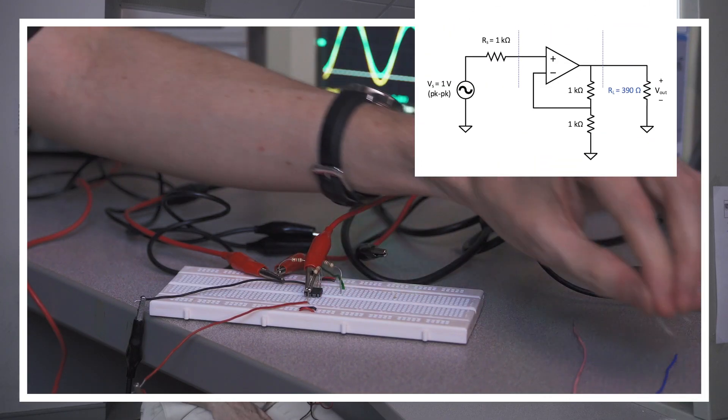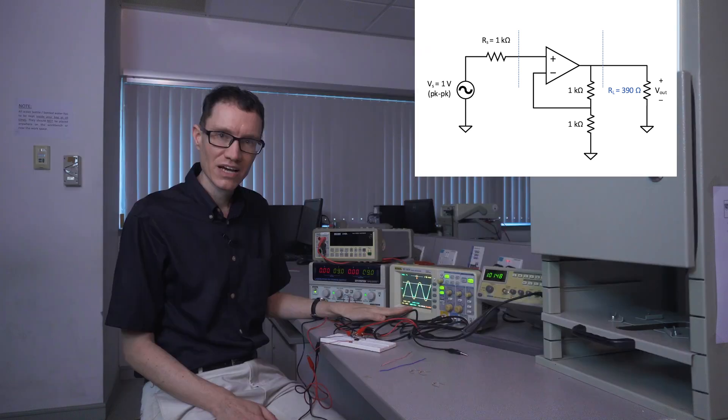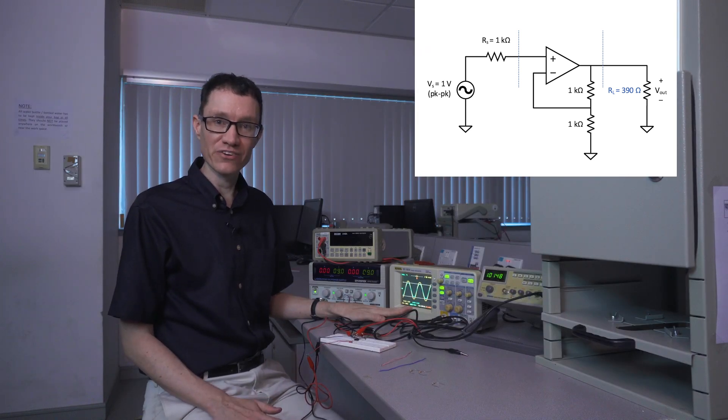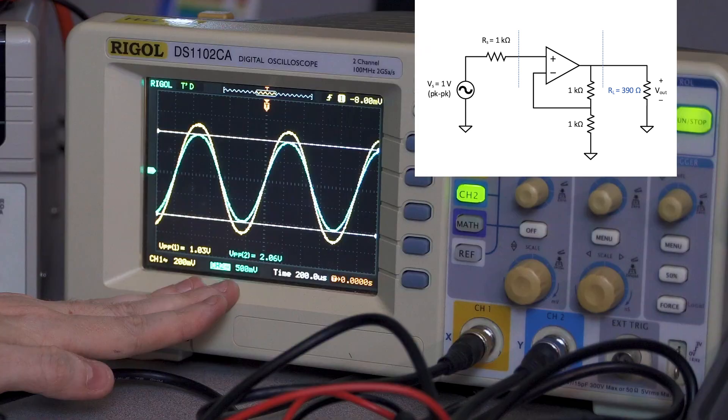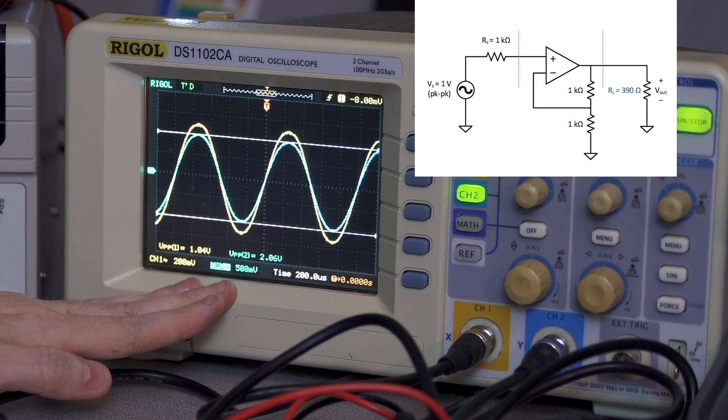Let's try it with the 390 ohm resistor. We can confirm that with the 390 ohm resistor, we still have a 2 volt peak to peak signal at the load.